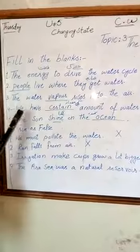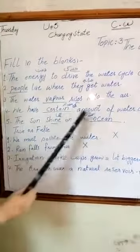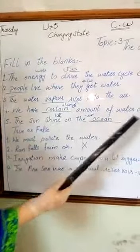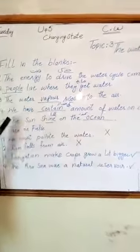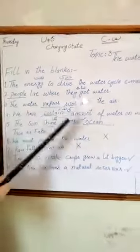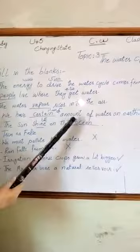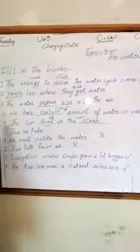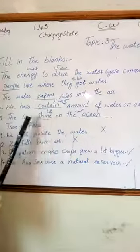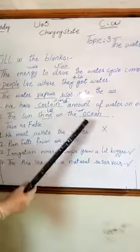Number four: we have a certain amount of water. Number five: the sun shines on the ocean.